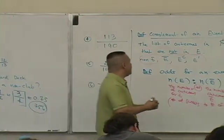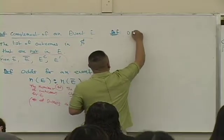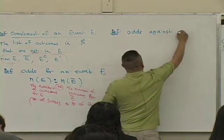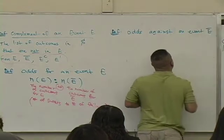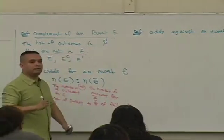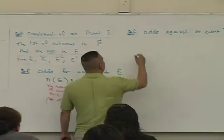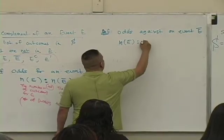Okay, similarly, you have a definition for what's known as the odds against an event. The odds against an event E, and that's defined to be N of E complement to N of E.